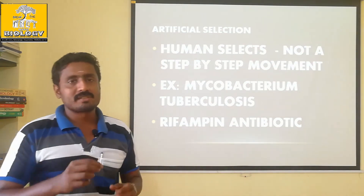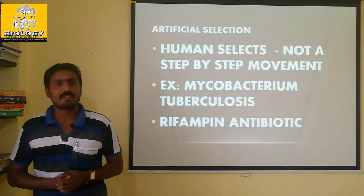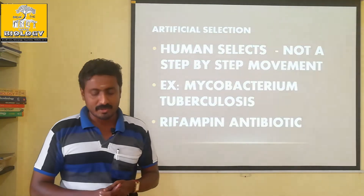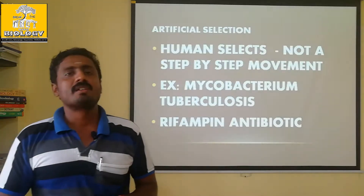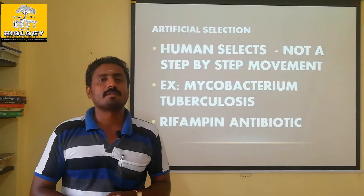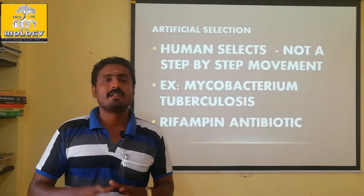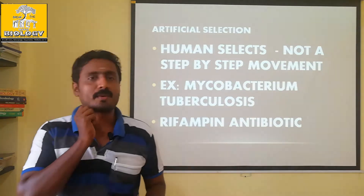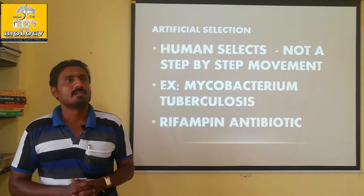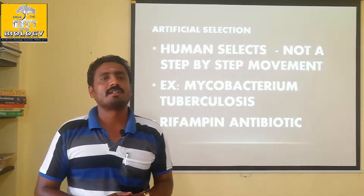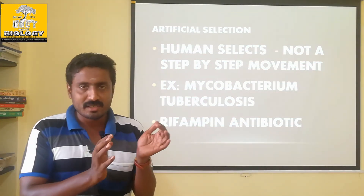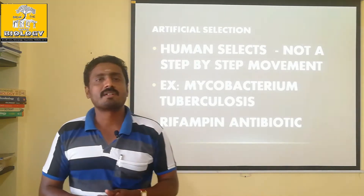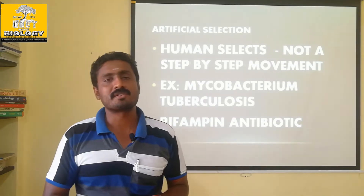In the Natural Selection video, we discussed how nature selects stronger characters in a population. There are stronger, moderate, and weaker individuals. The weaker ones are not going to survive. Nature is selecting a particular stronger character in a particular population.